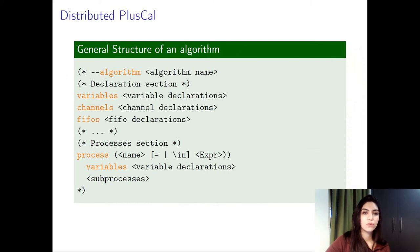Here we can see the general structure of a distributed PlusCal algorithm. It resembles the general structure of a PlusCal algorithm. The differences can be seen here, where you can define channels to represent unordered channels. You can define fifos, like we've seen in our example. And here, instead of giving the process one body, you can actually give it multiple subprocesses.